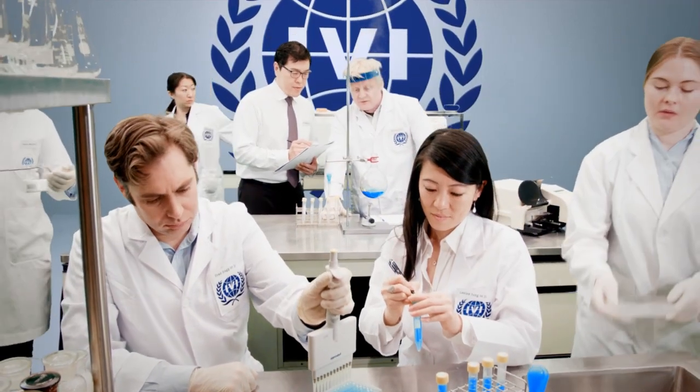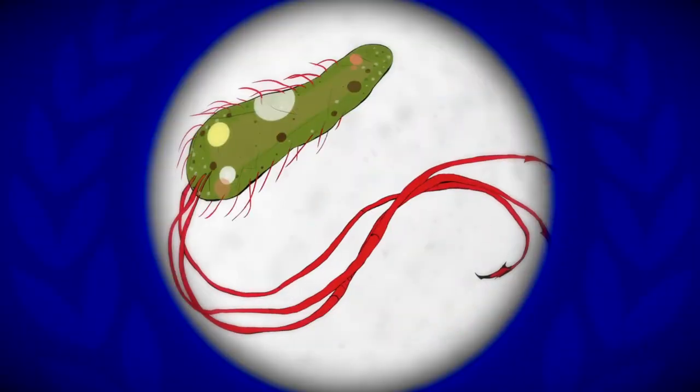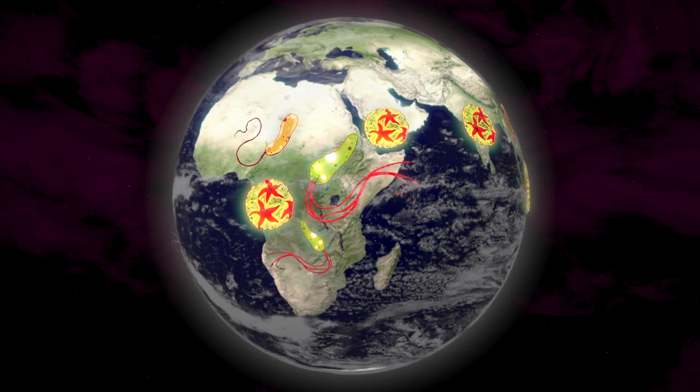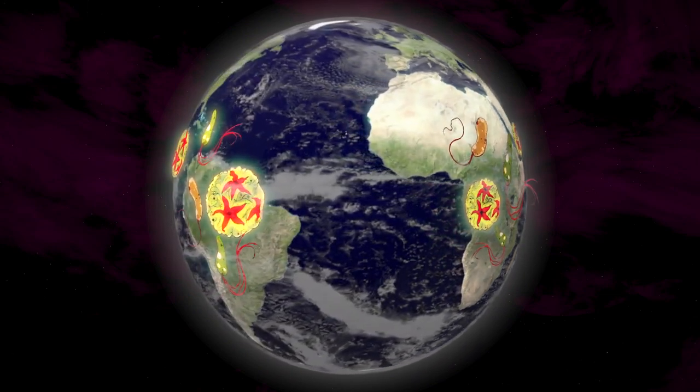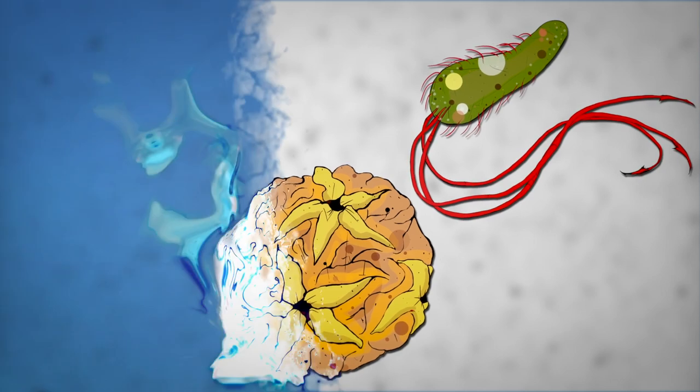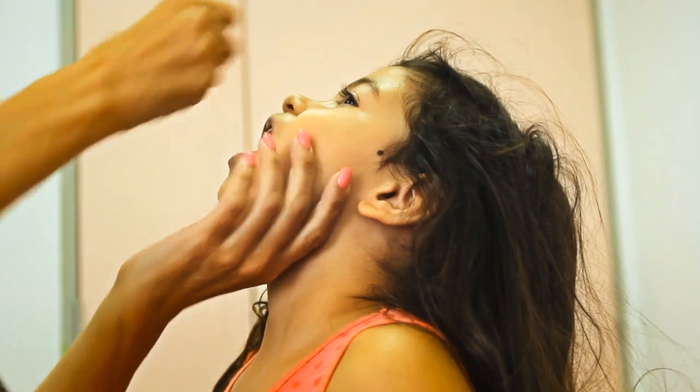IVI conducts research to discover vaccines which combat typhoid, dengue, cholera, and other diseases which strike the poor in developing countries. When a candidate graduates from the laboratory, it is exhaustively tested for efficacy, scalability, and safety.